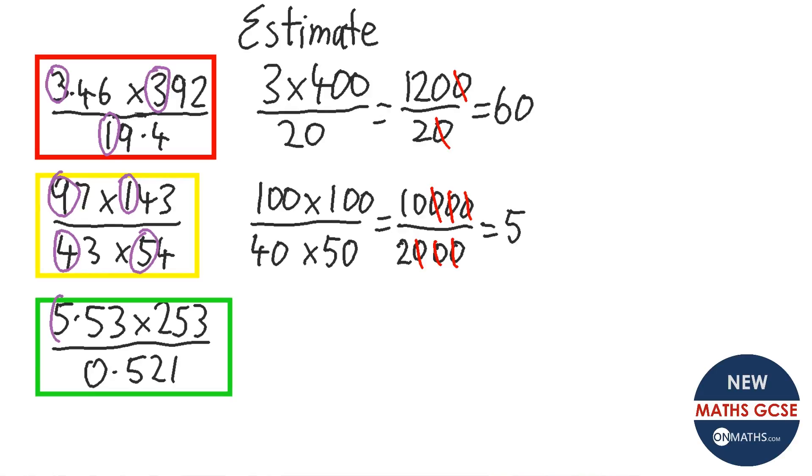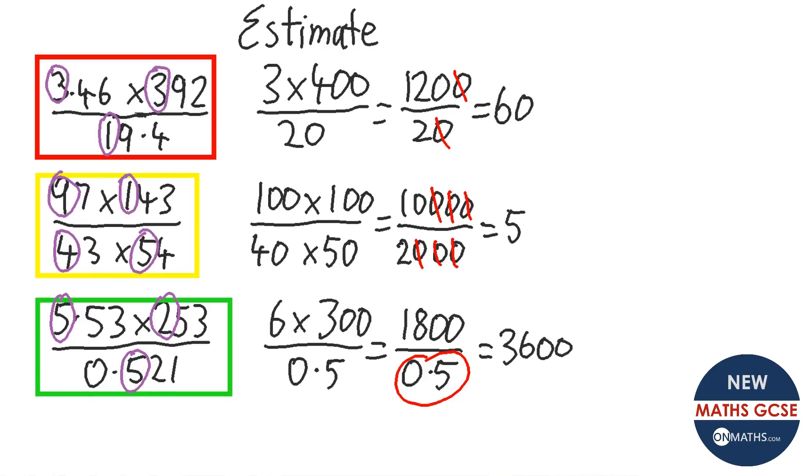Okay, so for the last one, these are our significant figures. So 5.53, so that's going to turn into a 6. 253, so that's going to be a 300. And then over 0.5. 6 times 3 is 18. 0, 0. And as we said before, if we are dividing by 0.5, we double the number. So doubling 18 would give us 36. So doubling 1,800 would give us 3,600, or 3,600. And there we go.